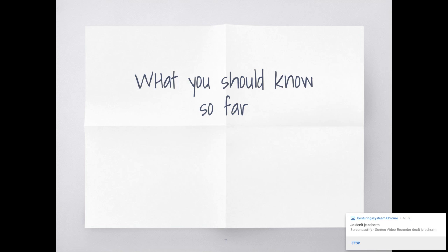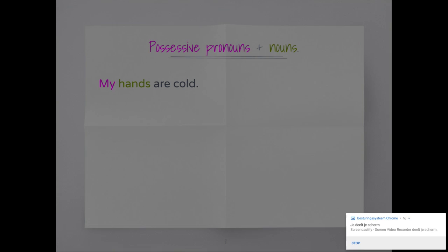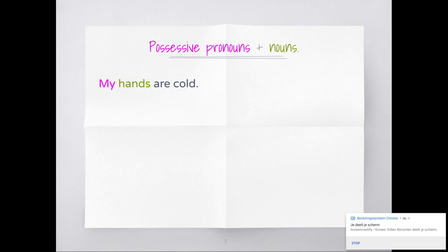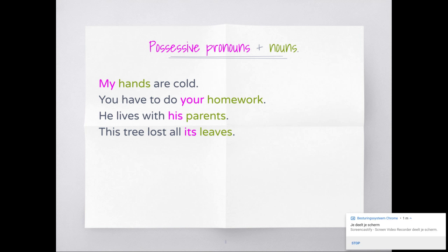What should you know so far? Let's have a look. Possessive pronouns plus nouns: my hands are cold - 'my' is the possessive pronoun, 'hands' is the noun. You have to do your homework - 'your' is a possessive pronoun, 'homework' is a noun. He lives with his parents - 'his' is the possessive pronoun, 'parents' is a noun. This tree lost all its leaves - 'its' is a possessive pronoun for the tree.